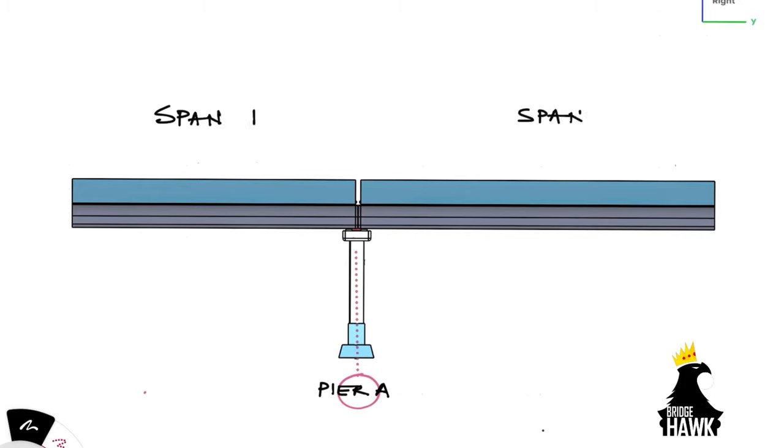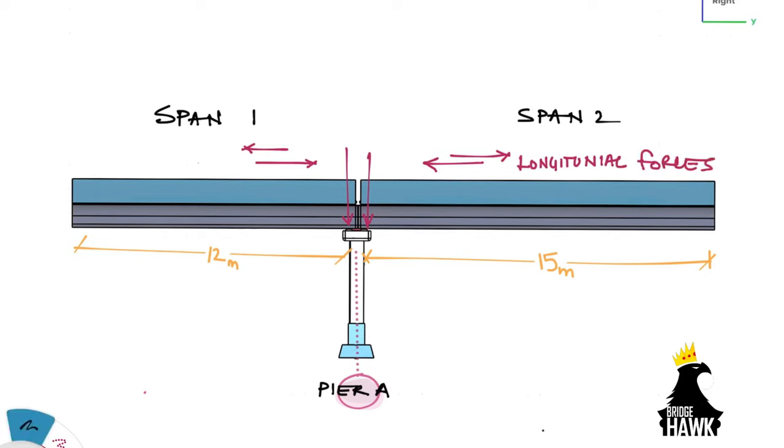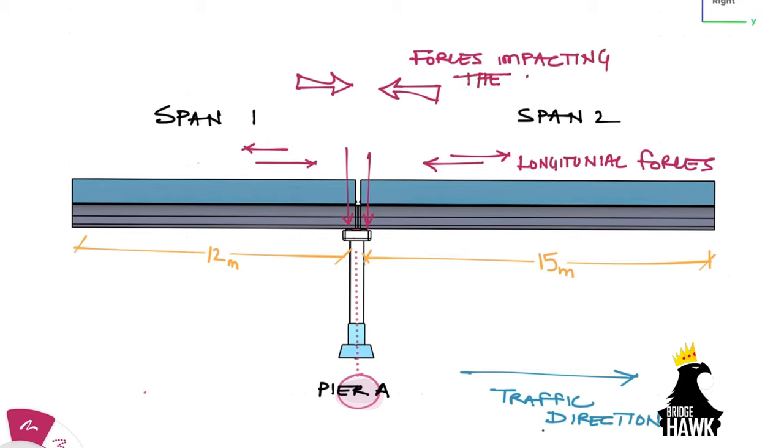As you can see, the two spans are unequal in width, hence the longitudinal forces would be different from either of the spans. There are two spans: span 1 is 12 meters and span 2 is 15 meters in length. The longitudinal direction is along the traffic direction. These longitudinal forces are mainly due to the braking and traction force, the seismic forces in longitudinal direction, and the temperature forces causing expansion and traction.